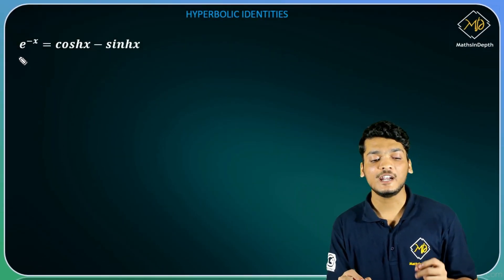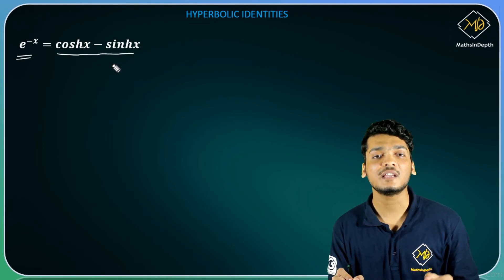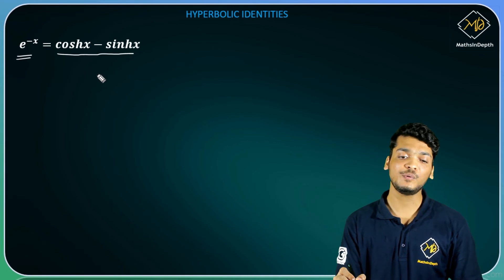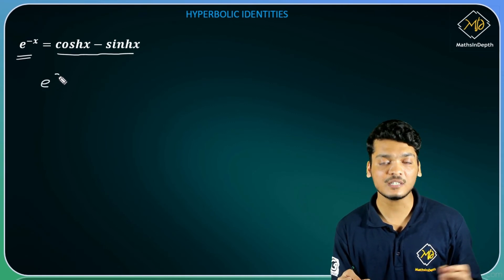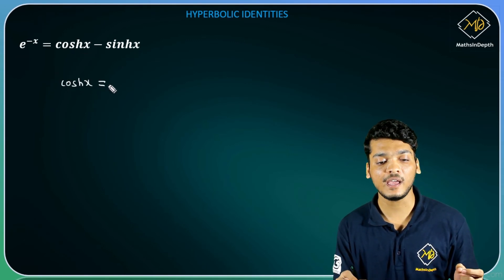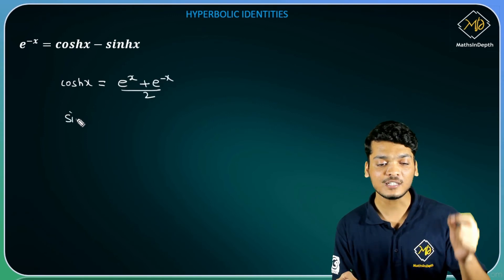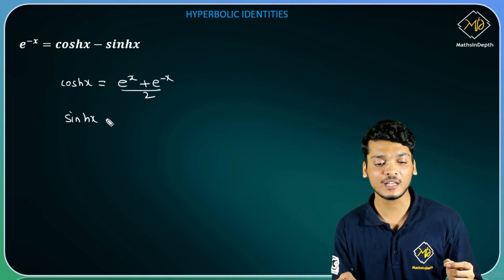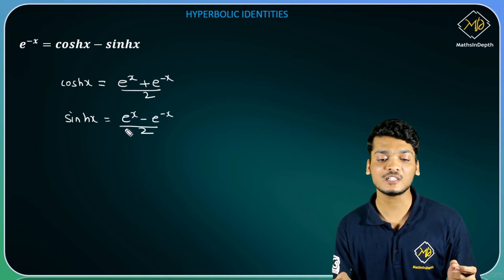So let's see the next identity. Next identity mein mujhe prove karna hai e raise to minus x equals to cosh(x) minus sinh(x). Ise prove karna kaafi aasaan hai. Cos hyperbolic x ka definition tha e raise to x plus e raise to minus x divided by 2, and sin hyperbolic x ka definition tha e raise to x minus e raise to minus x divided by 2.